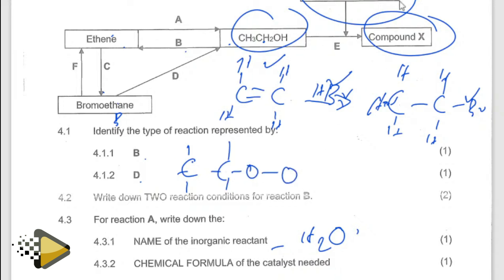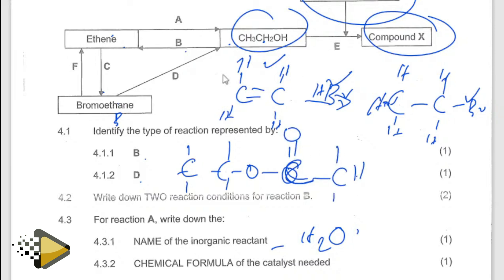They said structural formula. So you put the five carbons: one, two, three, four, five. And then you put the hydrogen throughout. Basically that's what they wanted — ethyl pentanoate.